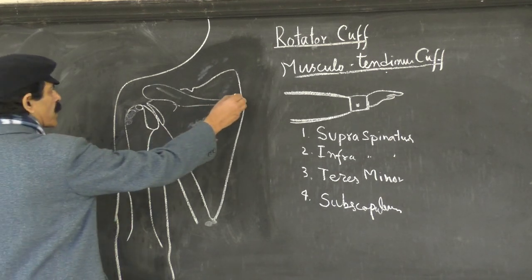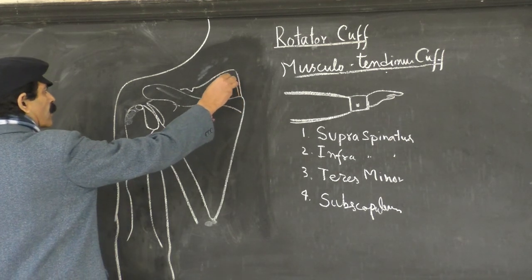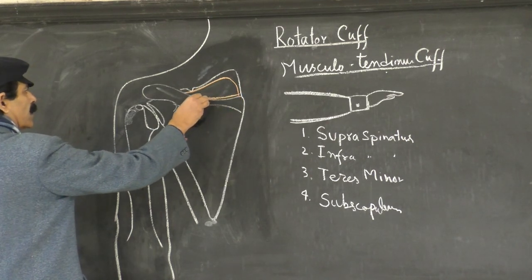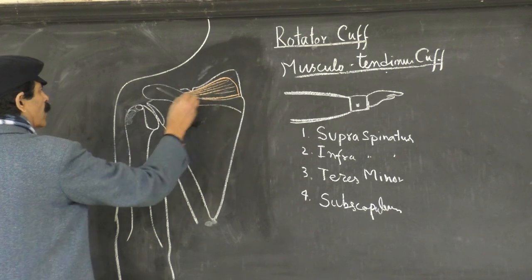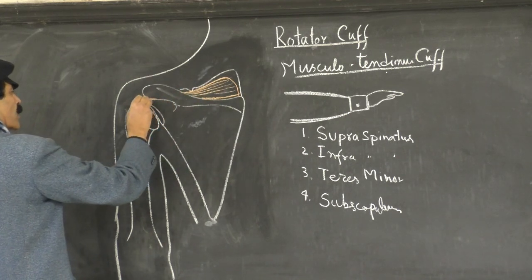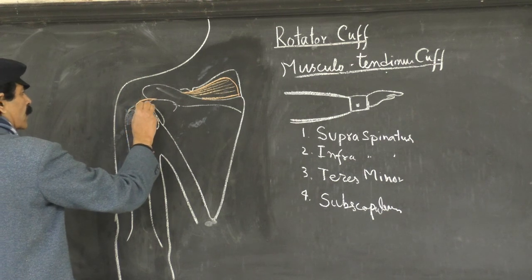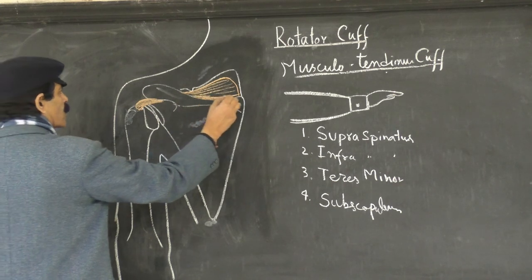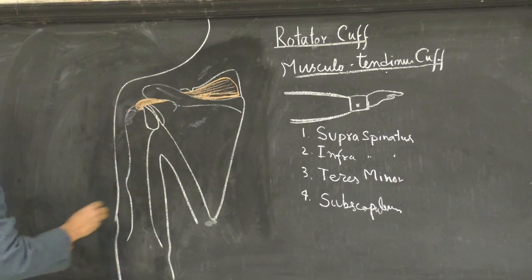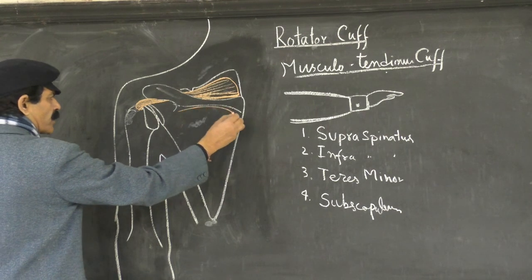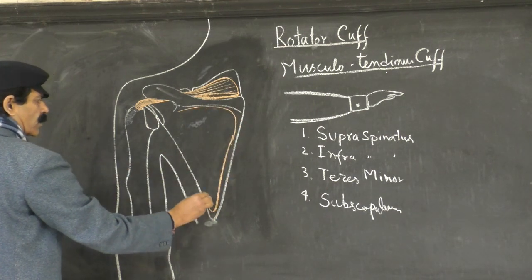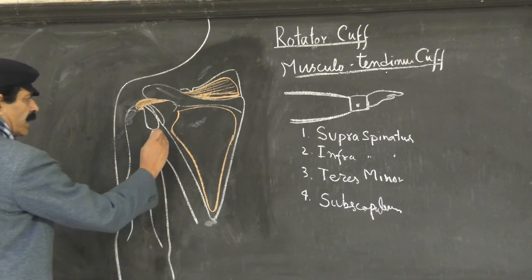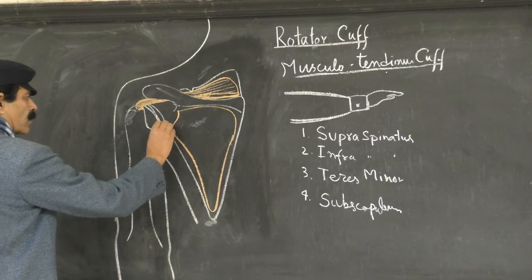The supraspinatus muscle takes origin from the supraspinous fossa over a wide area. Its tendon passes immediately below the acromion and is inserted on the top point of the greater tubercle. The infraspinatus muscle originates from the infraspinous fossa — this whole area is for the infraspinatus muscle — and from the upper part of the lateral border of the scapula.